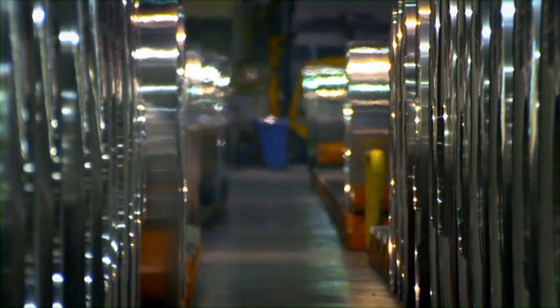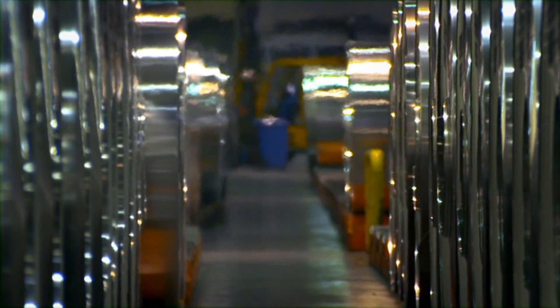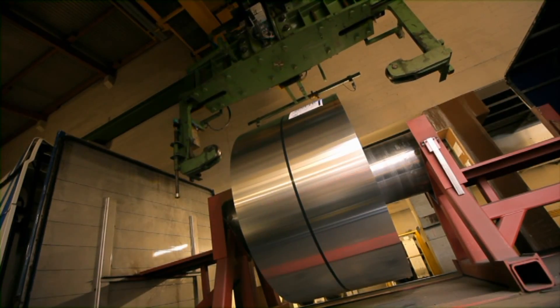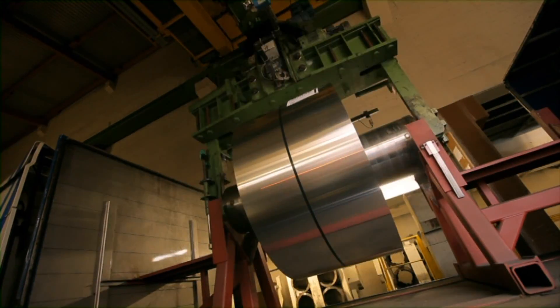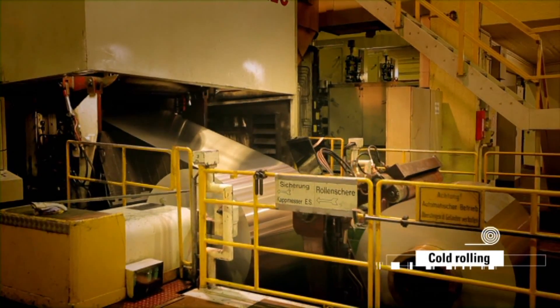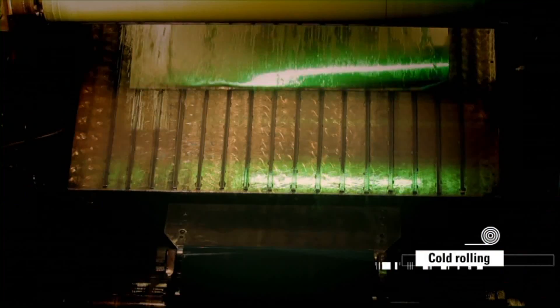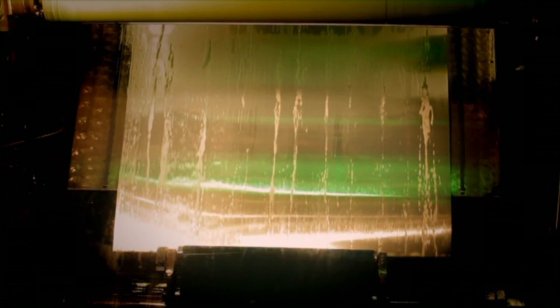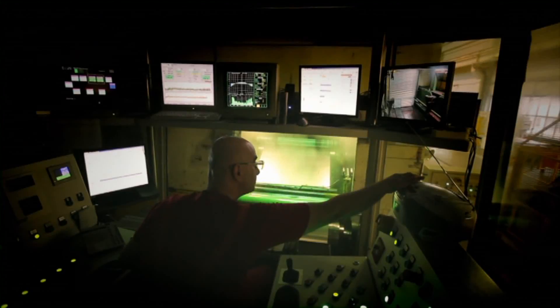This is where the aluminum is further reduced to the required thickness. This thickness will differ depending on its final use. For the printing plate industry this will usually be between 0.15 and 0.3 millimeters.